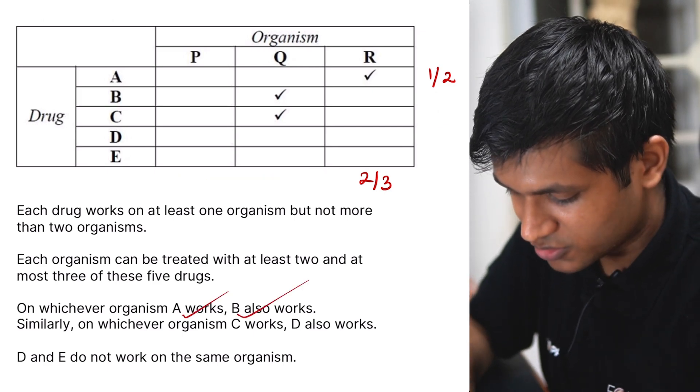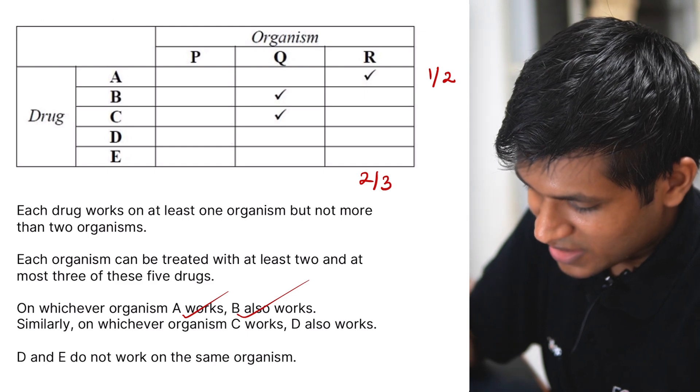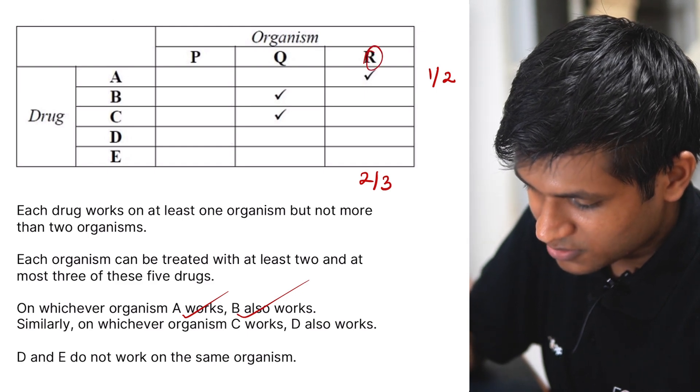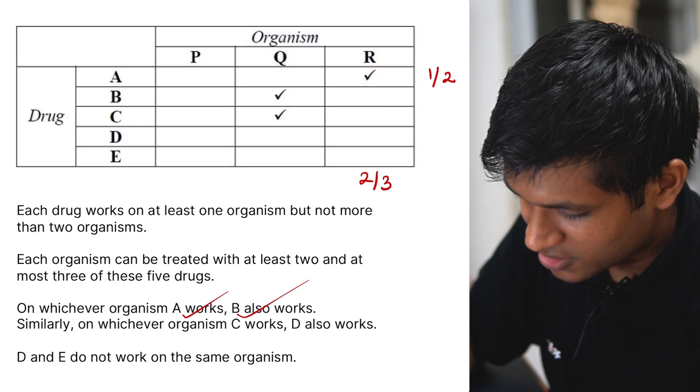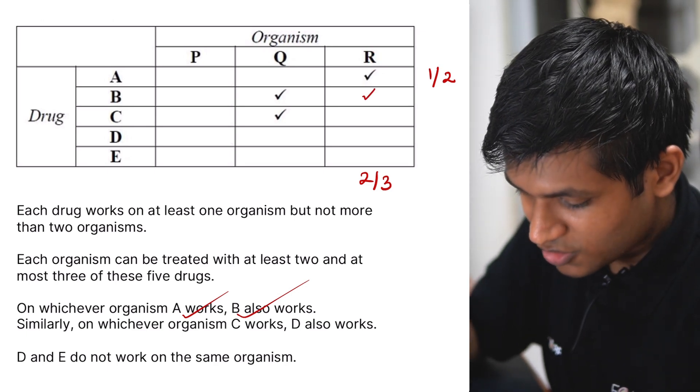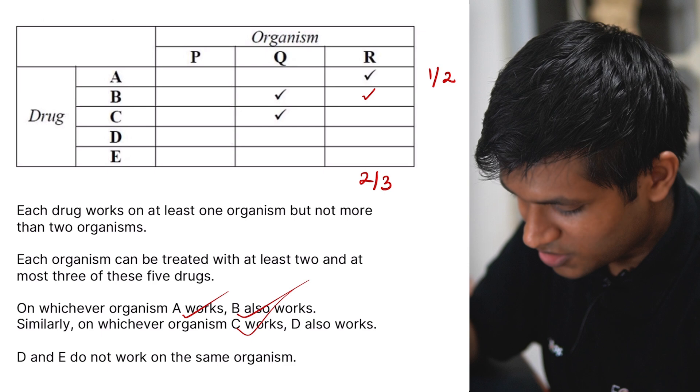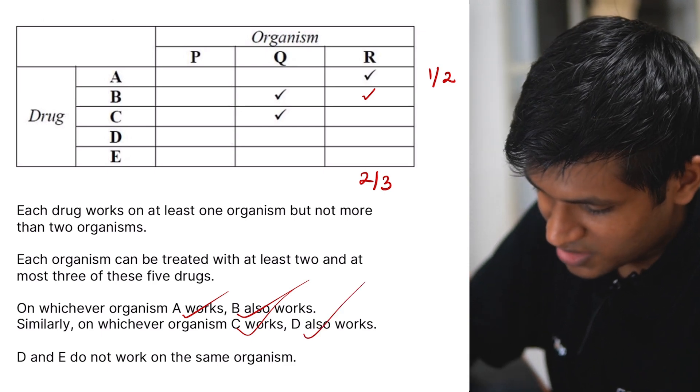On whichever organism A works, B also works. We see that A works on R, so that would mean B will also work on R. So tick mark dial it to him. Similarly, on whichever organism C works, D also works. That makes our life easy.